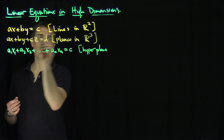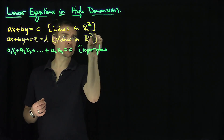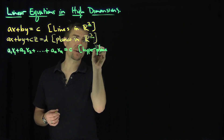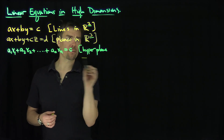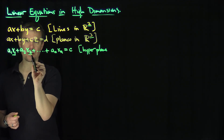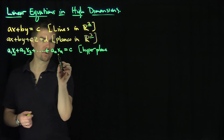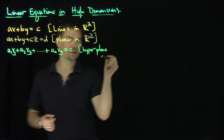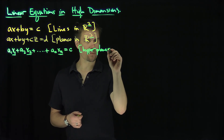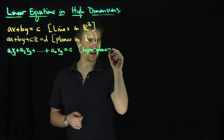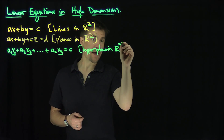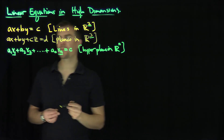Over here we had x and y — that was in R2. We had x, y, and z — that was R3. Here I have variables x1, x2, through xn. So this is a hyperplane in Rn.